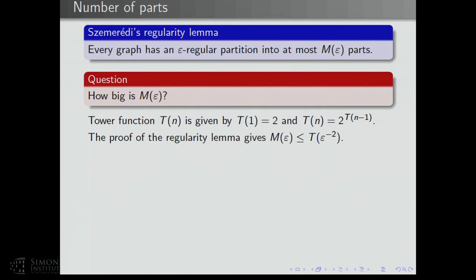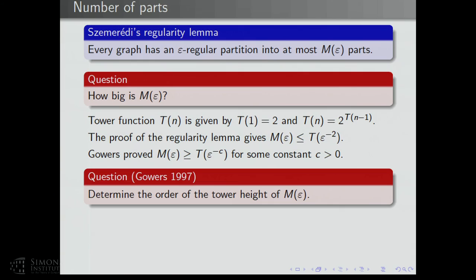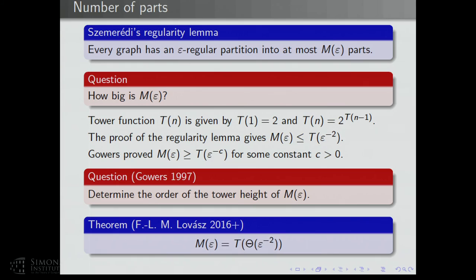For a long time, there was hope that you could improve on this substantially. That hope was shattered when in the mid-90s Tim Gowers showed, by a very nice probabilistic construction, that you need a tower-type bound — there's a lower bound which is a tower of height a power of 1/epsilon. He asked to determine the order of this tower height of M(epsilon). What we recently showed with my student Laszlo Miklós-Lovász is that the tower height is sharp — you really need 1/epsilon².